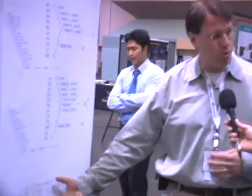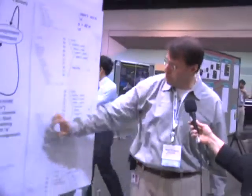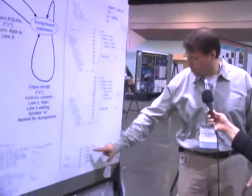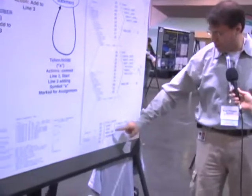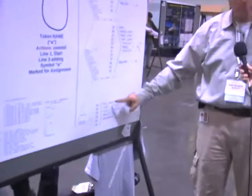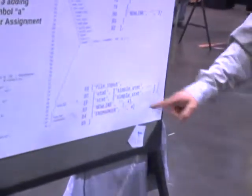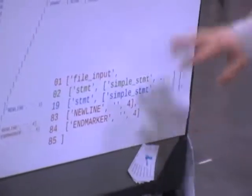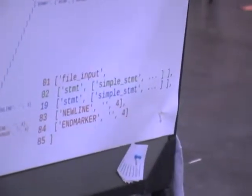I broke it down into collapsing these big boxes. Basically, it's a file with two statements — file input and there's standard input. A new line and the end of the file. And each of these statements — this simple statement — I blew up.